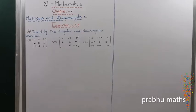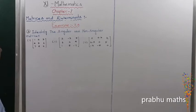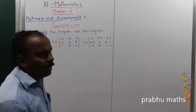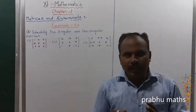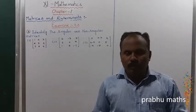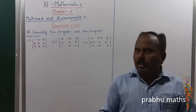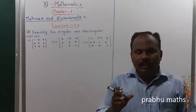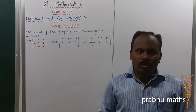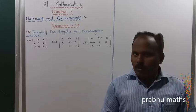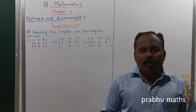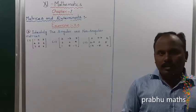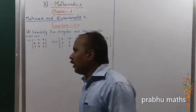Exercise 7.4, Third Sum: Identify the Singular and Non-Singular Matrix. What is a Singular and Non-Singular Matrix? To find det(A), the determinant of A: if det(A) is equal to 0 for any column or row expansion, that is called Singular. If det(A) is not equal to 0, that is called Non-Singular. That is the definition of Singular and Non-Singular.